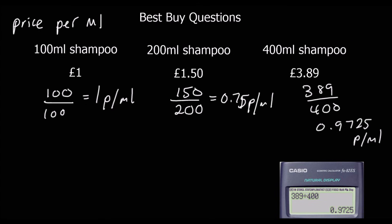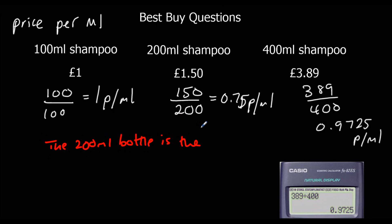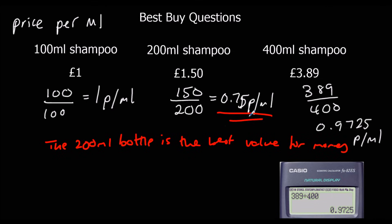So the best value for money in this case is the 200ml bottle — the 200ml bottle is the best value for money, as it has the lowest price per milliliter.